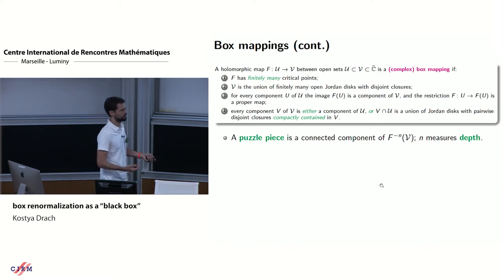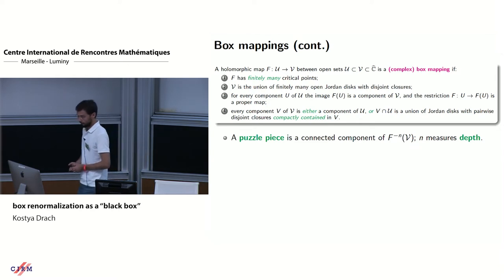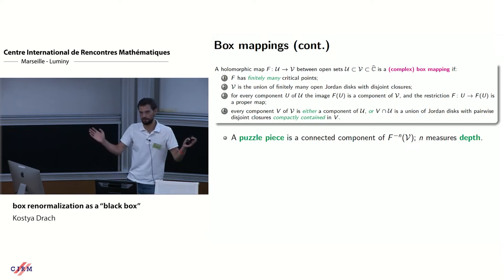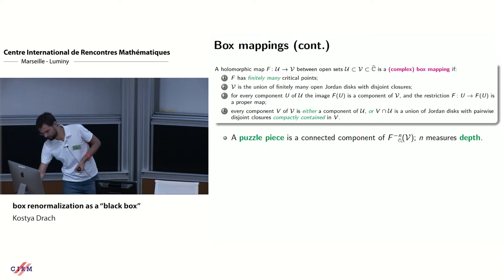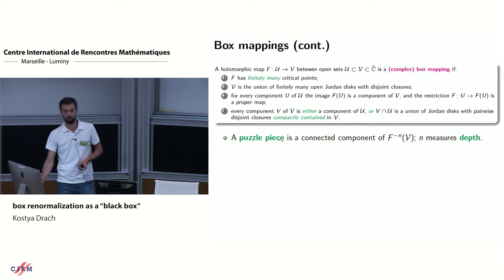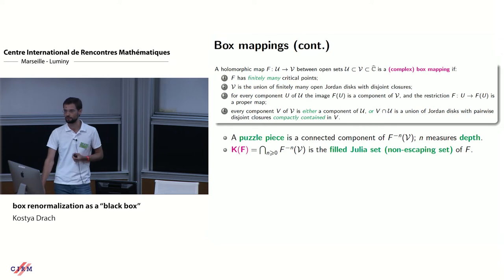There are related notions worth observing. This construction defines neighborhoods of points. The component of the n-th pullback of V is called a puzzle piece. I can define a non-escaping set — the filled Julia set of a box map K(F) — which is the set where I can iterate the map infinitely often.